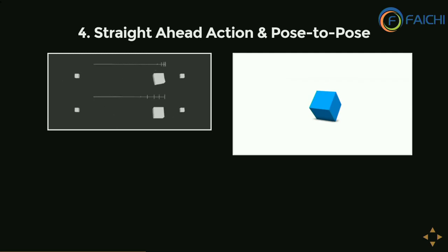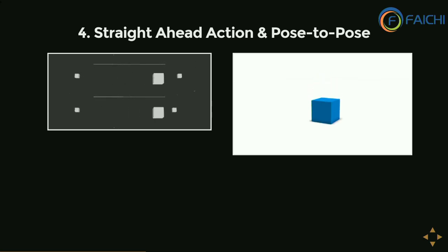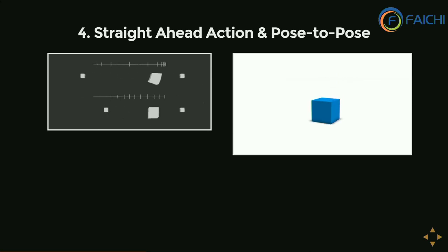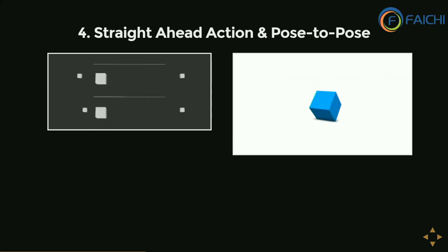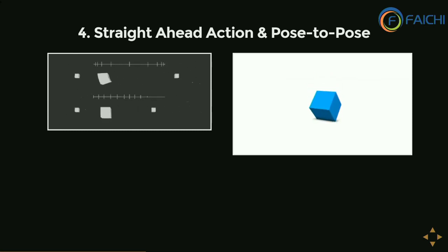Next is straight ahead action and pose to pose. Straight ahead action is animation created well-framed, while pose to pose is filling the gap between two frames. On the right-hand side, when a cube is jumping and rotating, that is pose to pose. When it is just rotating without taking any pose, that is straight ahead action. Using CSS, it is beneficial to start with pose to pose and use the timing function to lead into straight ahead action, adding a natural feel to the animation.